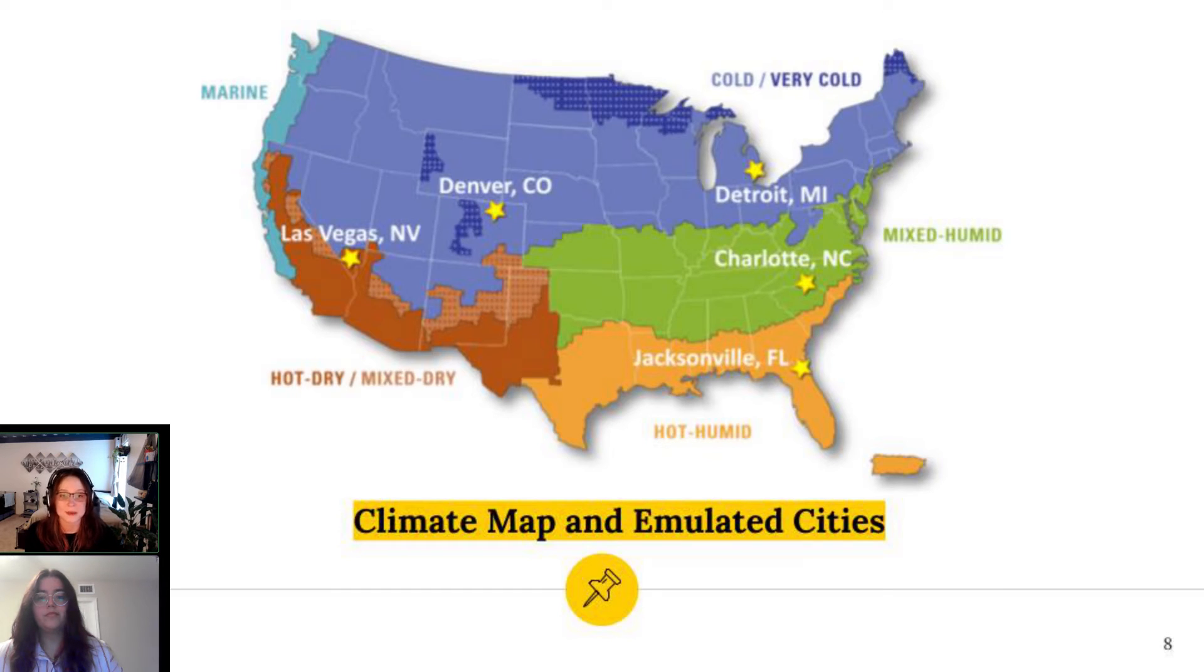This is a climate map showing the five cities we chose and their respective climate regions. These cities include Las Vegas, Nevada, Denver, Colorado, Detroit, Michigan, Charlotte, North Carolina, and Jacksonville, Florida. Their climate regions are hot dry, cold, mixed humid, and hot humid.